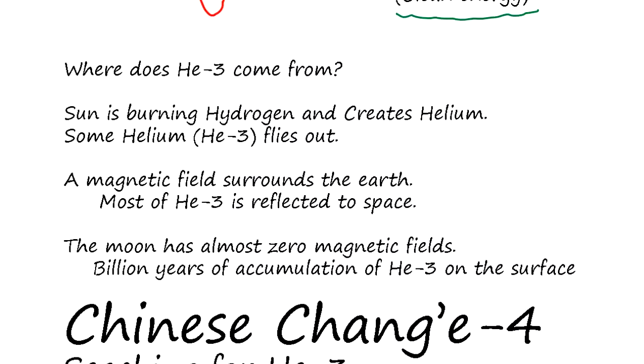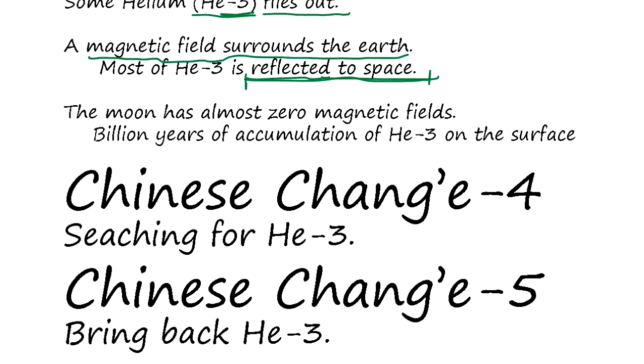Where does it come from? The sun is burning hydrogen and creating Helium. Some Helium-3 flies out. When it comes to the Earth, the Earth's magnetic field surrounding the Earth is going to reflect it back to space. So it's very hard to find Helium-3 on Earth. But the moon has almost zero magnetic field. Over a billion years, there's an accumulation of Helium-3 on the surface. That's from the sun.